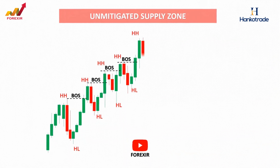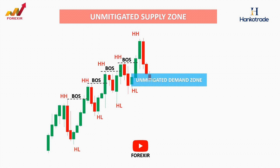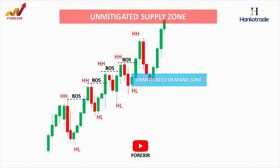However, if the price did not interact with the upper supply zone, we would have a market structure like this. In this scenario, if the price moves to the downside, it is likely to be rejected when it reaches the unmitigated order block. Instead of changing its initial direction, it may start a fresh impulsive wave to the upside. As previously mentioned, changes of character can occur in two ways: minor and major. Understanding these distinctions is crucial for traders to make informed decisions in different market conditions.